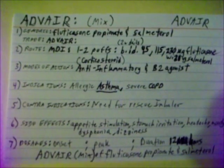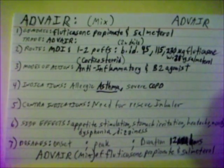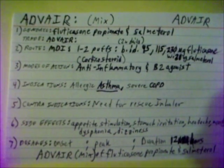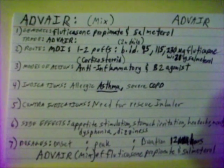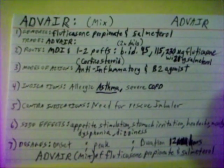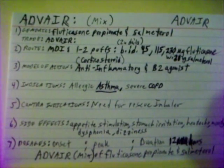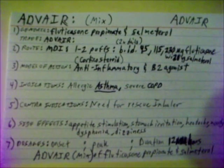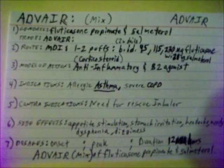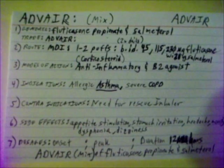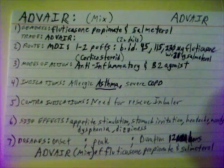Advair's mode of action: it is a corticosteroid — an anti-inflammatory — and a B2 agonist which causes dilation of smooth muscles in the breathing tissue. Indications for Advair are allergic asthma and severe COPD.